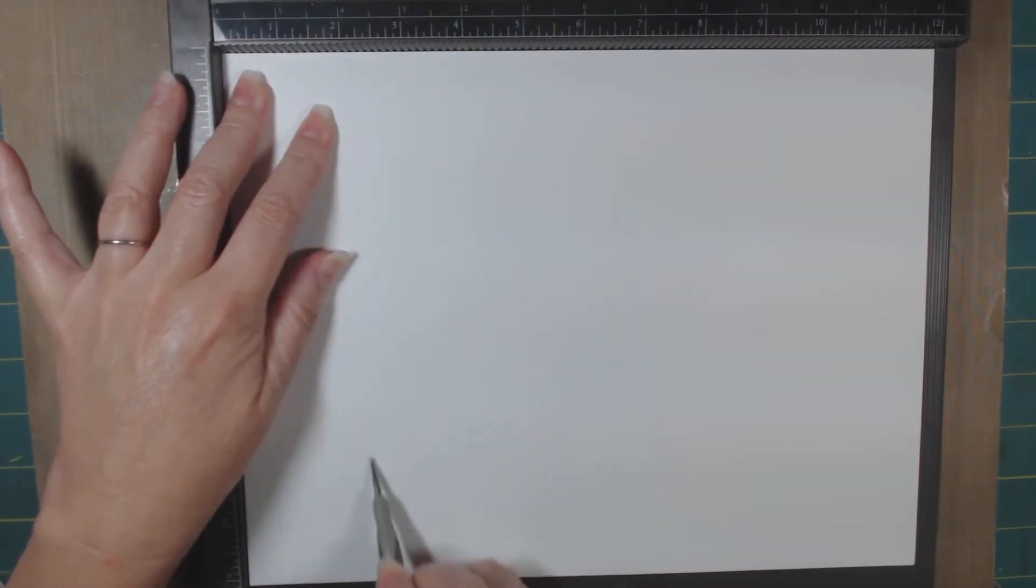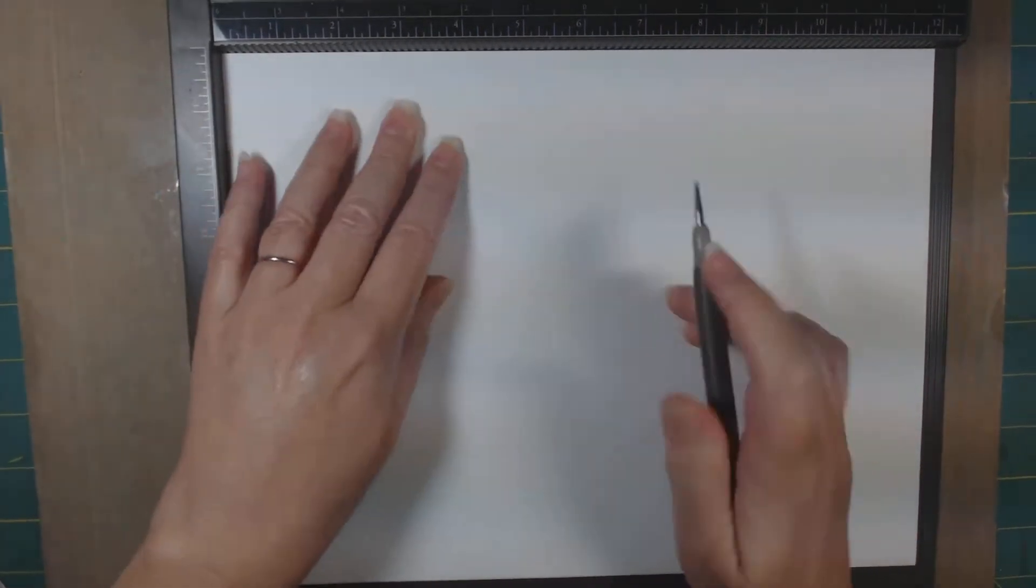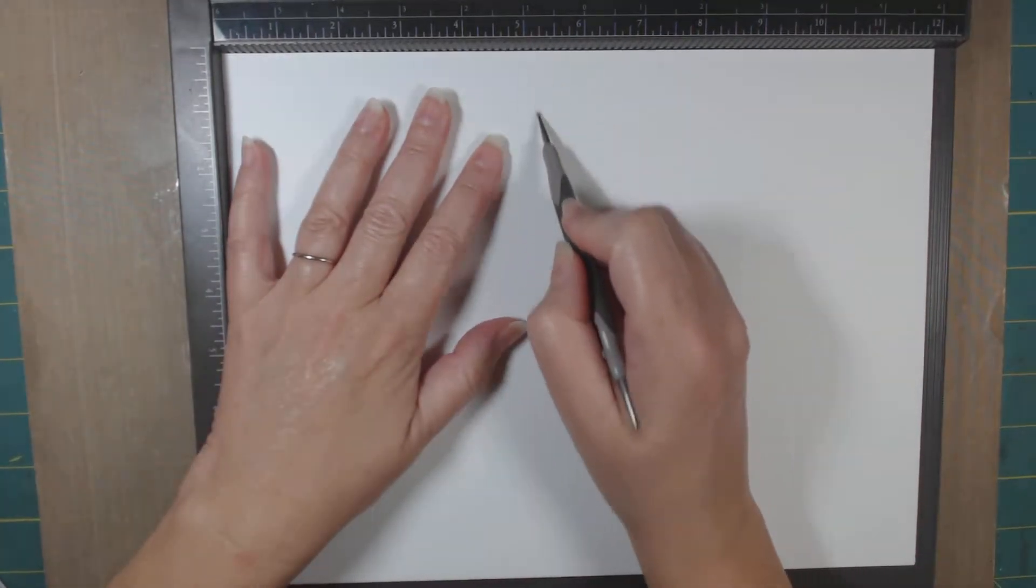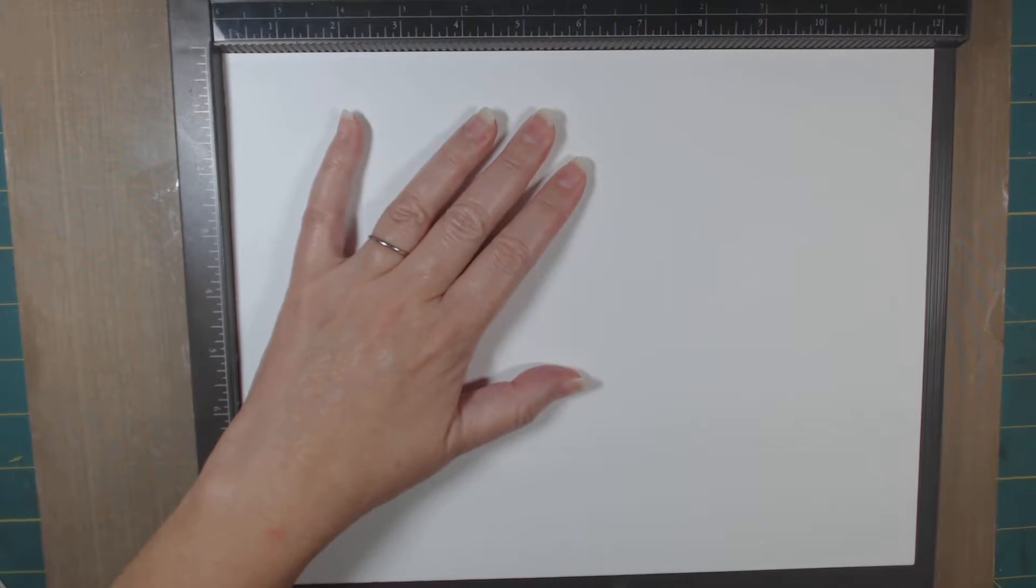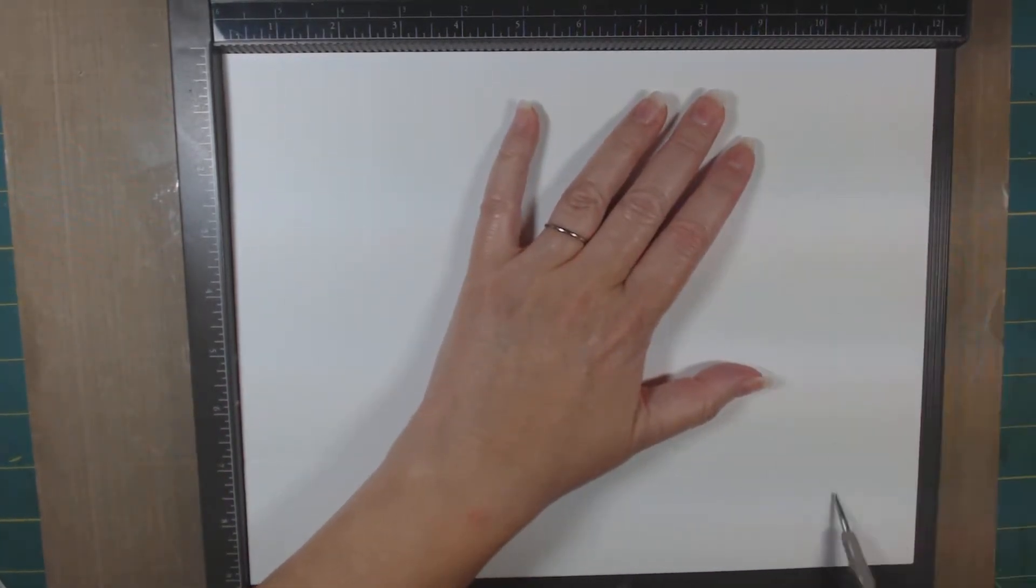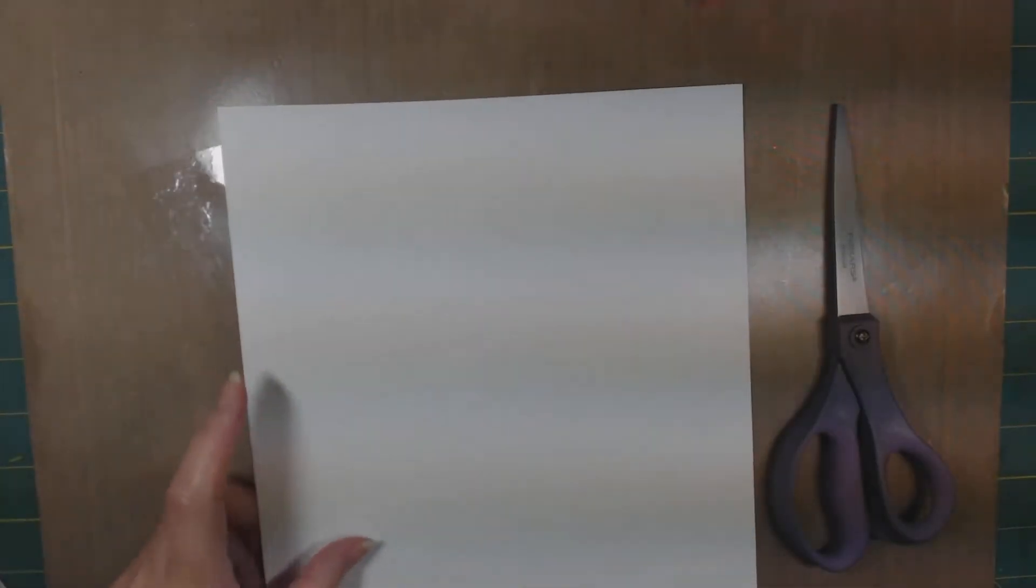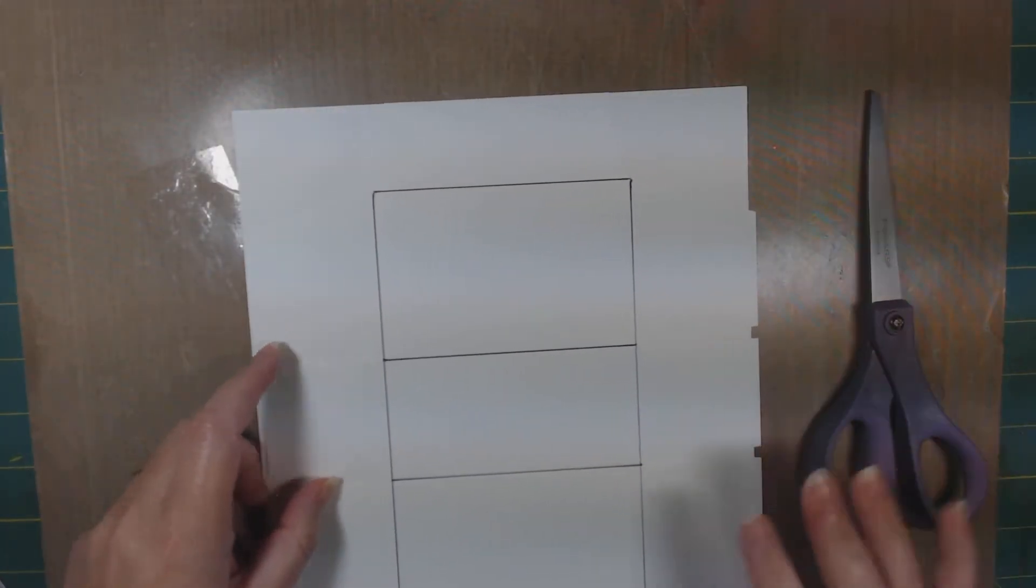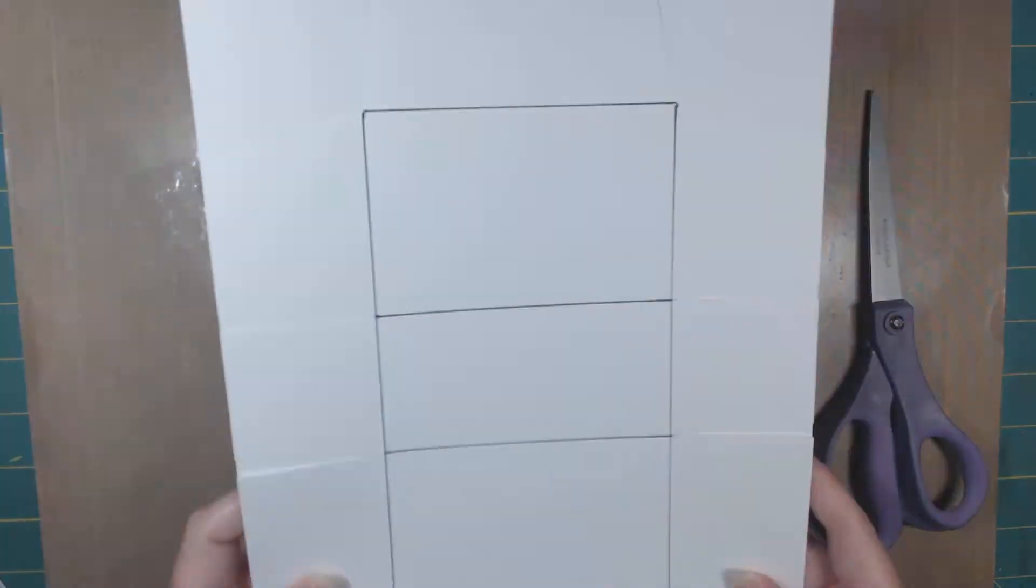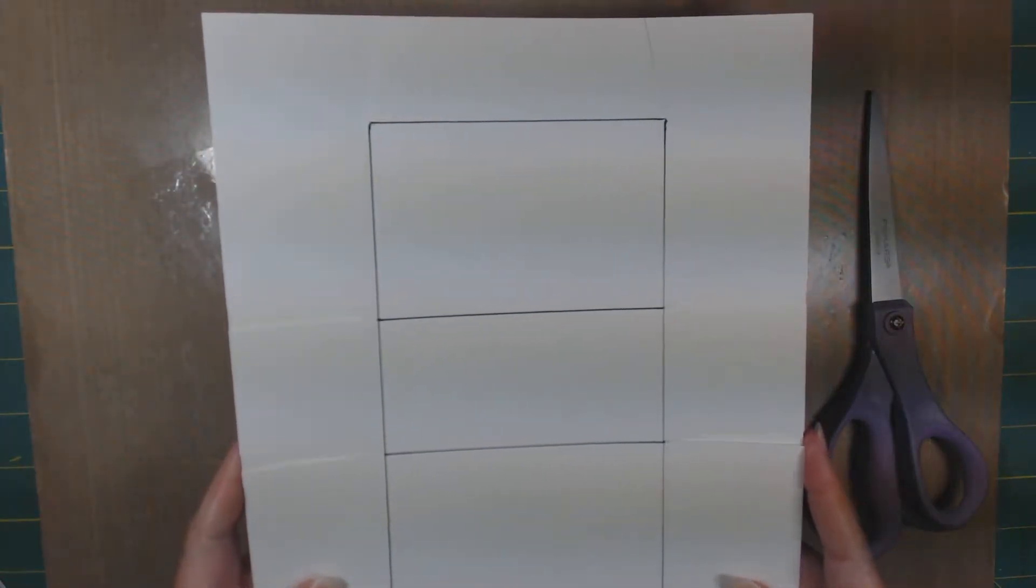Then we're going to set the scoring tool aside and this is when you're going to need your scissors. I'm going to get my sample one out here so that I can show you exactly what we just did, because I know it was probably a little difficult for you to see all the score lines on this white paper.